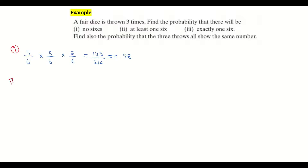Looking at part two, it has the key words 'at least.' At least one six means I can get one six, two sixes, or three sixes. So at least one six is the opposite of getting no sixes. I take the full probability, which is 1, and subtract the probability of not getting a six — that's 125/216 from part one. When I subtract 125/216 from 1, I get 91/216, which is 0.42. So about 42% of the time you will get at least one six. Key word: 'at least' means one minus the probability of no sixes.